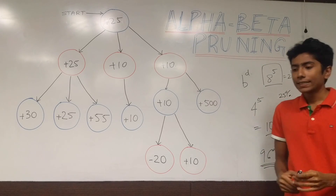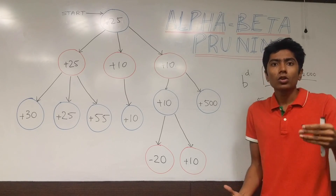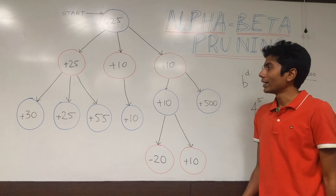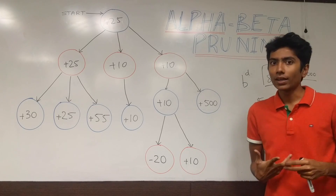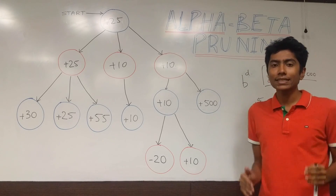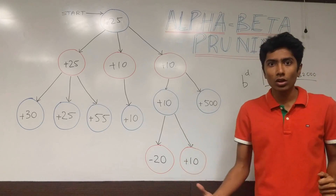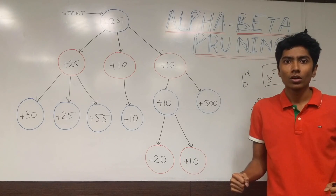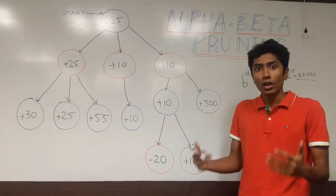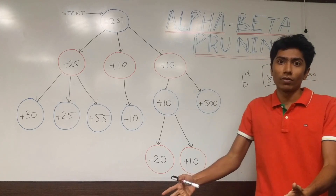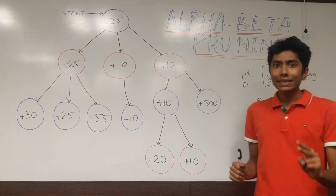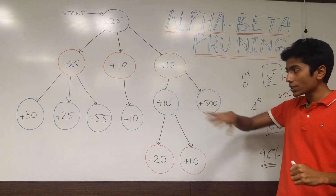Alpha-beta pruning says that if a node can be mathematically proven to never need to be evaluated, then don't evaluate it. It uses two parameters: alpha and beta. Alpha means what is the minimum amount that I can take — this concerns the first player who is always trying to maximize their score. Beta means what is the maximum that I have to give — the second player is minimizing, so they think about their worst case: what is the maximum I need to give away.